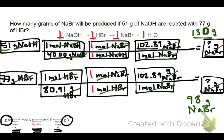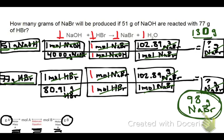So which is our correct answer — the 130 or the 98 grams of sodium bromide? We always want to go with the lower of the two answers. In this case, 98 grams of sodium bromide is our correct answer. The reason is that this tells us that when we use up all of our hydrogen bromide, our HBr, all we're left with is 98 grams of sodium bromide. If we were to use up all of the sodium hydroxide, we'd end up with 130 grams. But we can't use up all of our sodium hydroxide because we ran out of HBr first. So our answer, again, is 98 grams of sodium bromide.